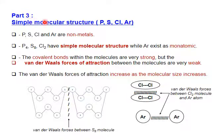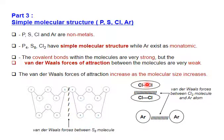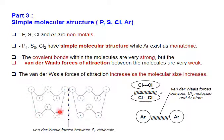Part three: simple molecular structure — phosphorus, sulfur, chlorine, and argon. All of them are non-metals. Phosphorus P4, sulfur S8, and chlorine Cl2 have a simple molecular structure, while argon acts as a monoatomic element. The covalent bonds within the molecule are very strong — for example, between chlorine atoms within Cl2. But the van der Waals forces of attraction between the molecules are very weak. The van der Waals forces of attraction increase as the molecular size increases. Between S8 molecules, the forces holding them are van der Waals forces.